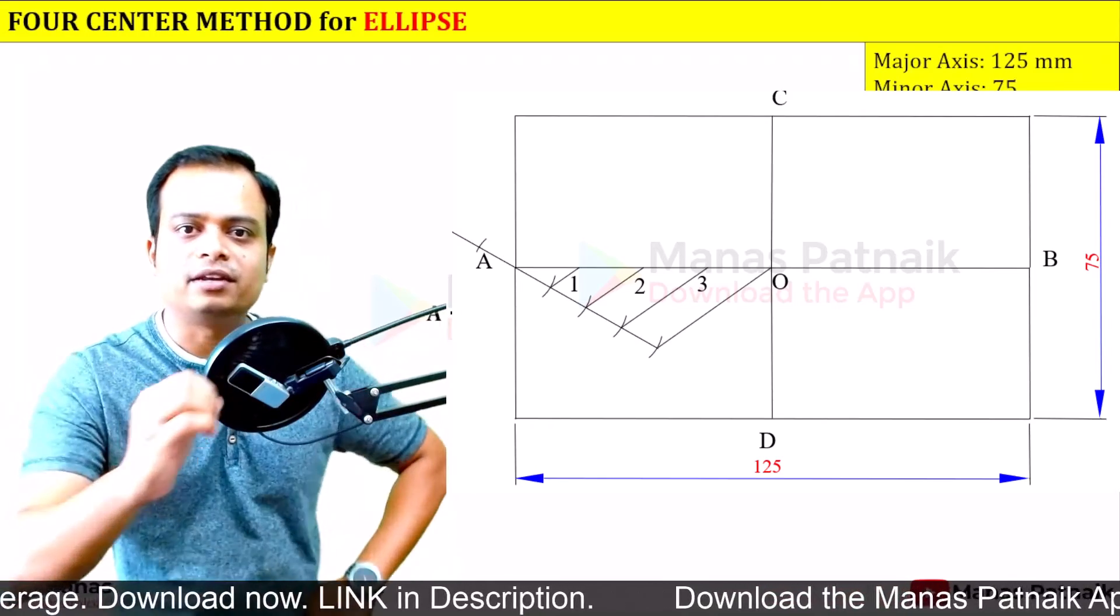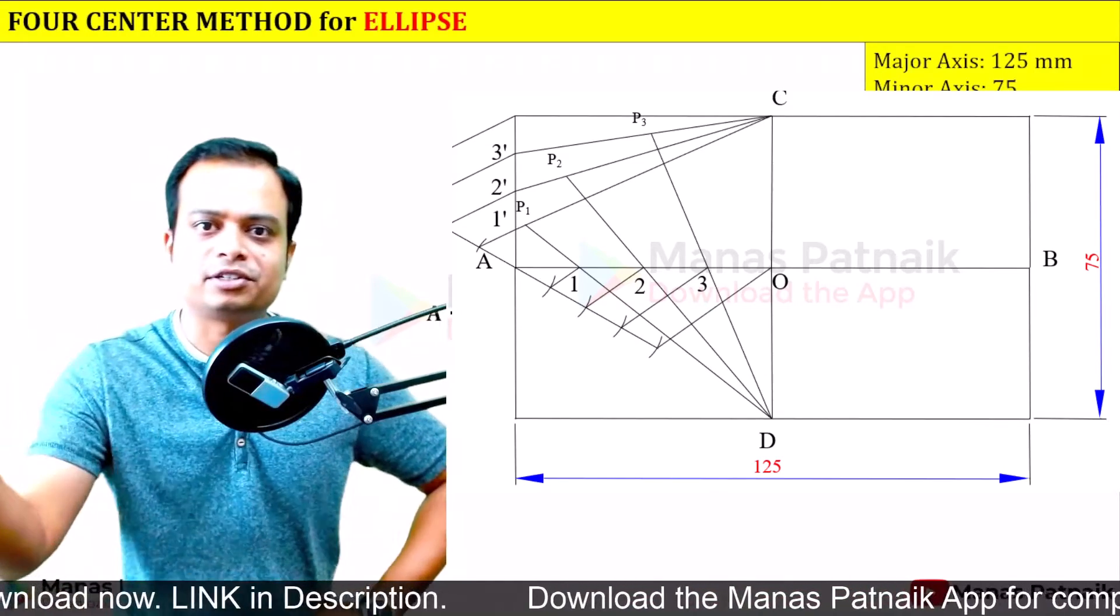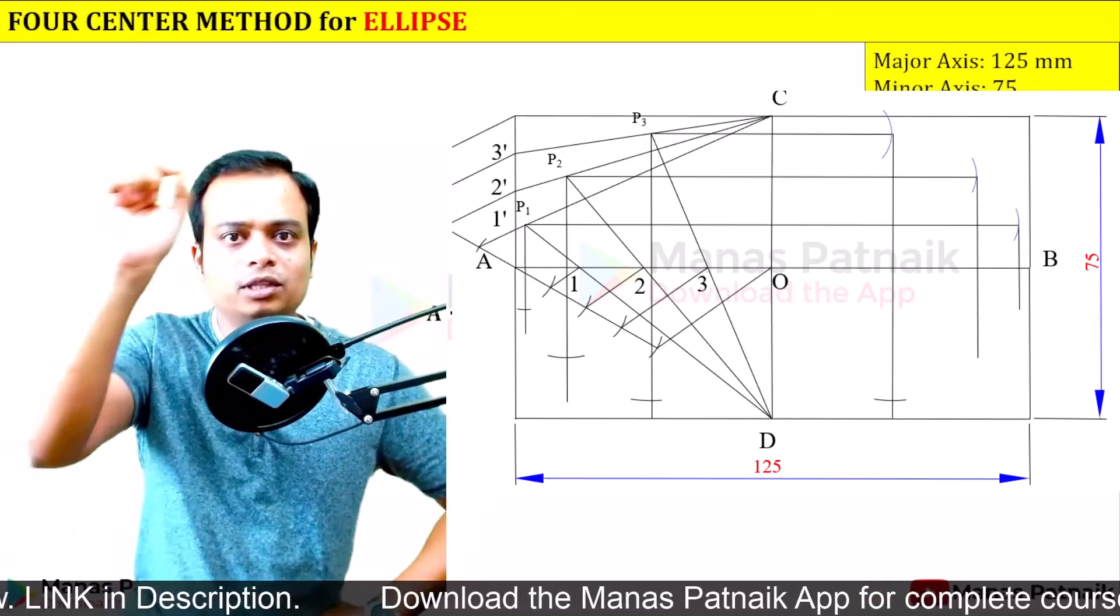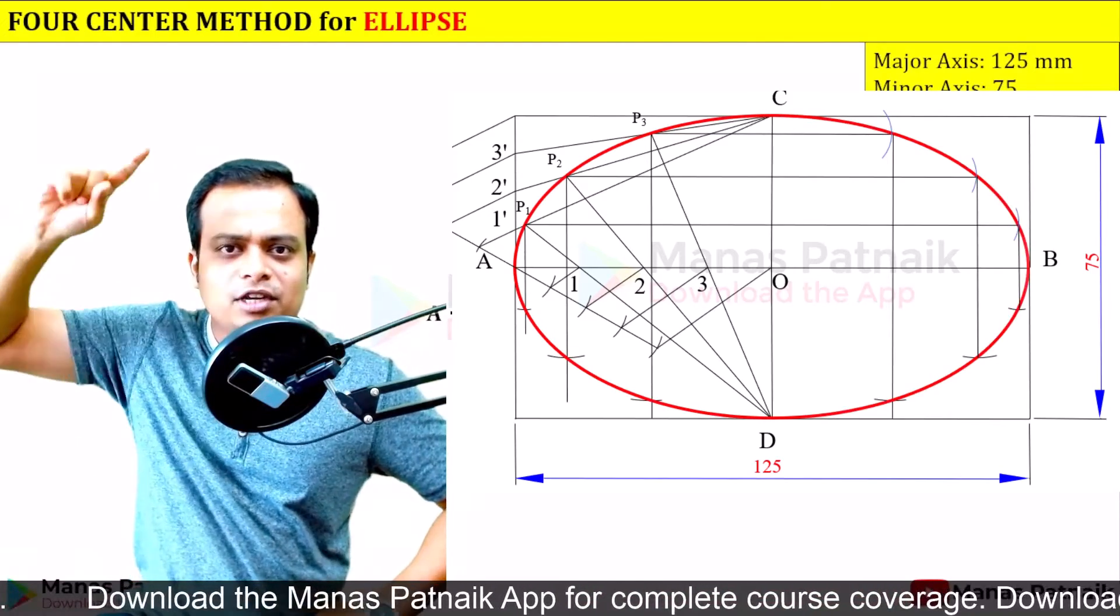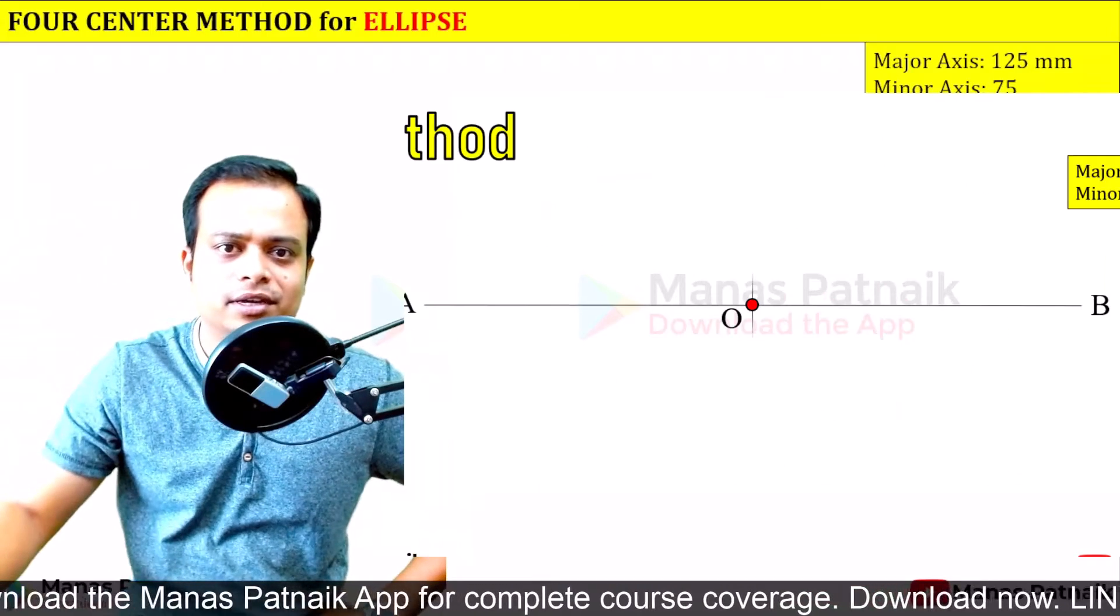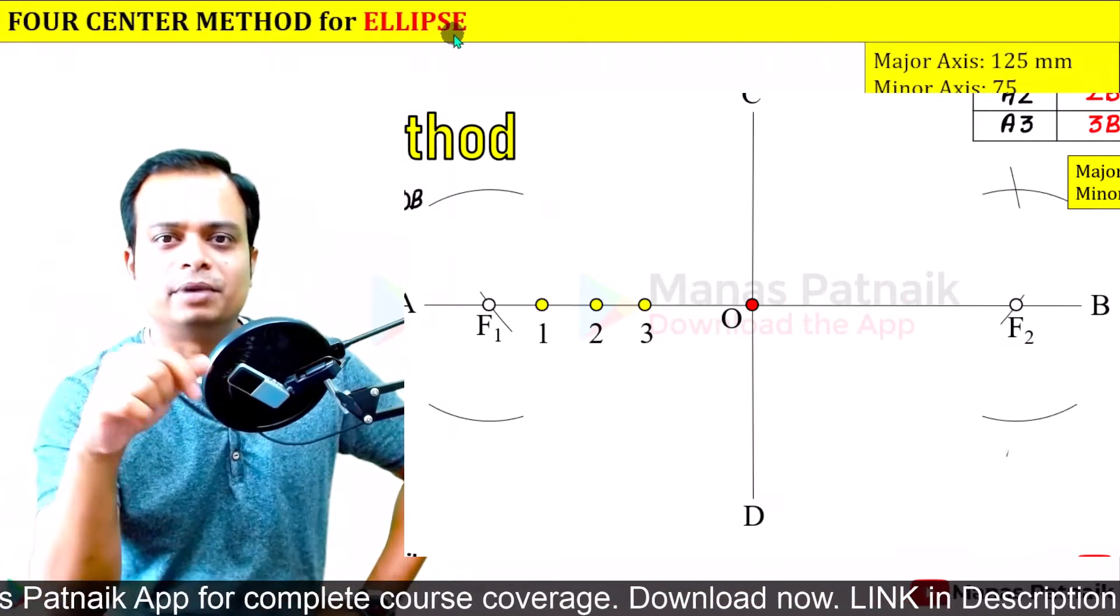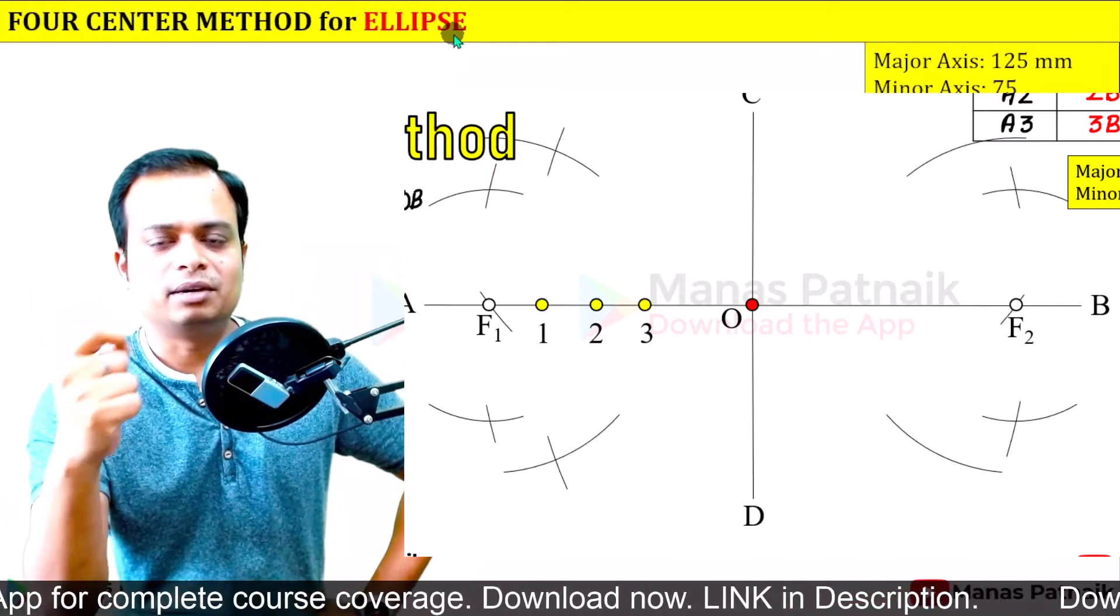We already know a lot of methods through which we can create an ellipse. Once the construction process finishes, you've got all the dots, all the points, and when you join all the points in proper sequence you have yourself a curve, which in this case is none other than an ellipse.